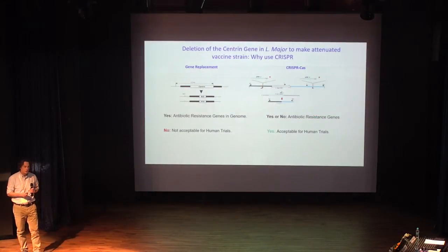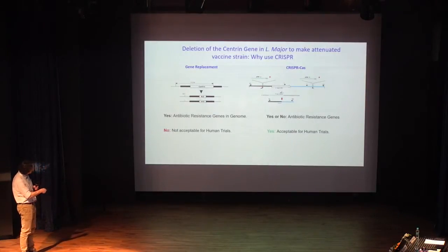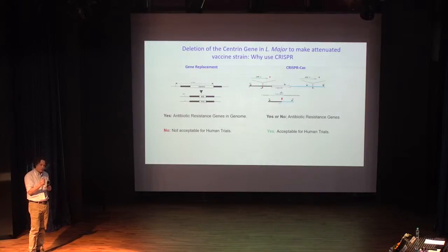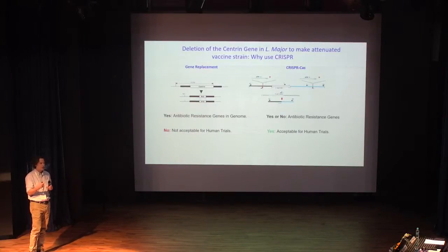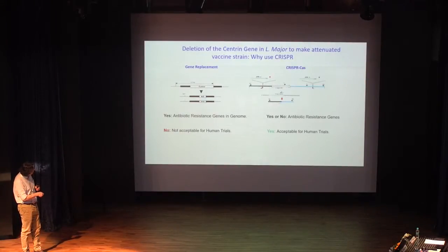I'll turn now to how we could use this to develop a vaccine. One of the ways of developing a vaccine is to use a live attenuated strain. There's been quite a lot of work done in Akasi's lab at the FDA, where he deleted a gene called the Centrin gene. Those parasites are still alive, but when he immunizes with them, he gets protective immunity. The beauty of the leishmania vaccine system is that if somebody has leishmaniasis and they're treated, they're immune for life — you only get the disease once, and this is quite unique in parasitic infections.